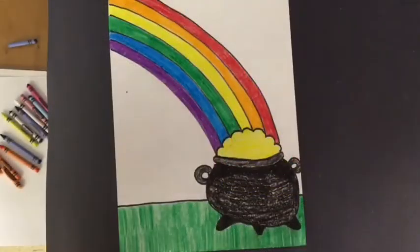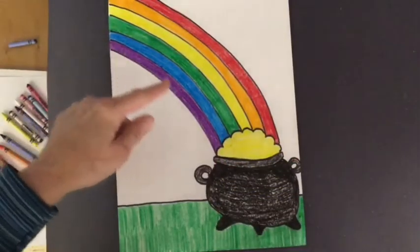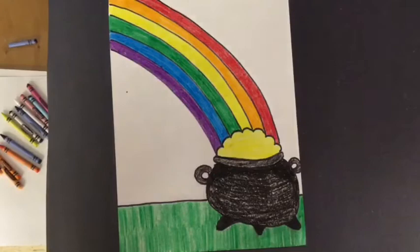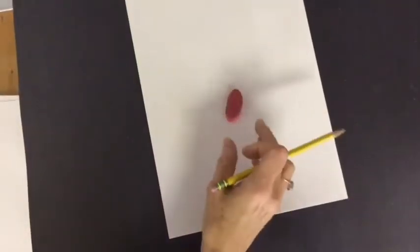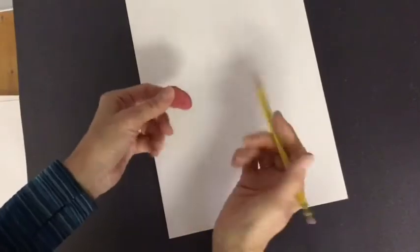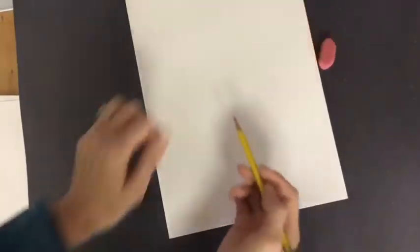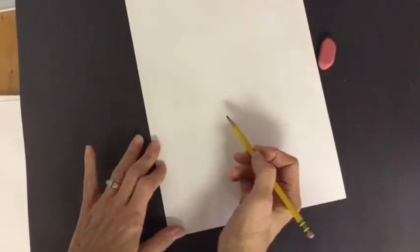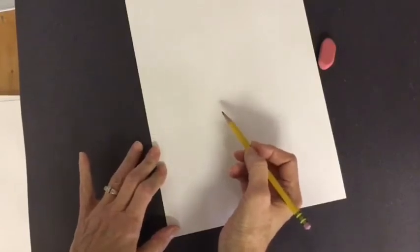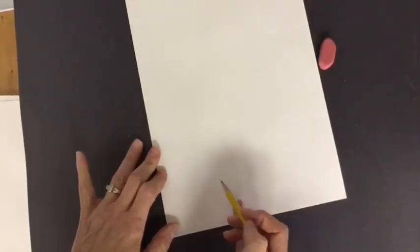So today we're going to draw a pot of gold at the end of a rainbow. Let's get started. Okay, so first step to drawing our pot of gold is to get a pencil and an eraser. We're going to draw lightly in pencil first because then we can erase any mistakes and correct it.